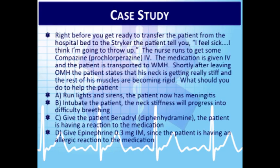Another case: right before transferring a patient, the patient says they feel sick and the nurse gives prochlorperazine IV. Shortly after leaving the originating hospital, the patient's neck becomes stiff and muscles become rigid. What should you do? Give Benadryl — this is extrapyramidal symptoms from the prochlorperazine, not an allergic reaction. EPS is a side effect, not an anaphylactic response.